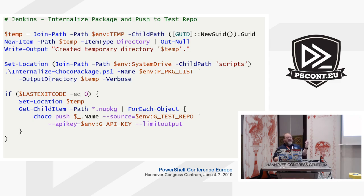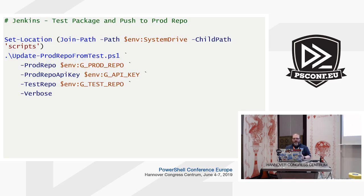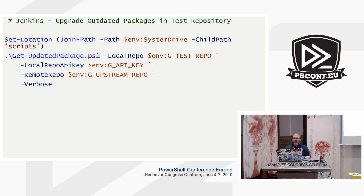Looking at the top section: we're creating a temp folder, we're running an internalize-choco-package script, and once that package is internalized, if there are no problems, in the last section at the bottom we're pushing it onto our test repository. The next Jenkins job is simply a wrapper around the update-prod-repo-from-test PowerShell script. The final job looks at the test repository, compares its contents with the Chocolatey Community Repository, and if there are any updated packages, it brings them down and pushes them to the test repository.